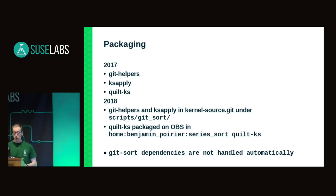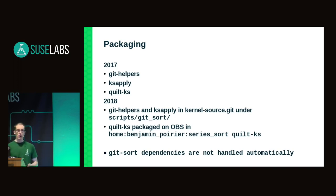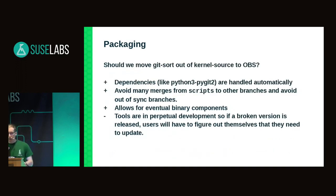Shortly after the presentation, the content of git-helpers and ks-apply was added to the kernel-source.git repository under the scripts subdirectory. Quilt.ks was packaged on OBS. This made it easier for users of kernel-source to use the scripts because they didn't have to fetch from all of these other repositories. However, as a limitation, it doesn't address the fact that the git-sort dependencies — in particular pygit2, the Python module which interfaces with libgit2 — still have to be handled manually.